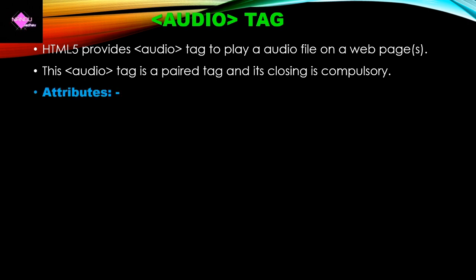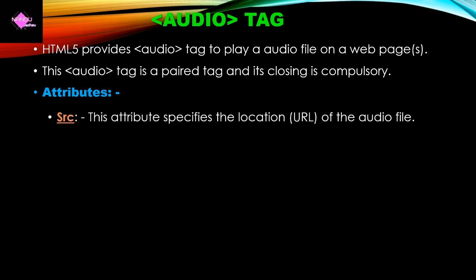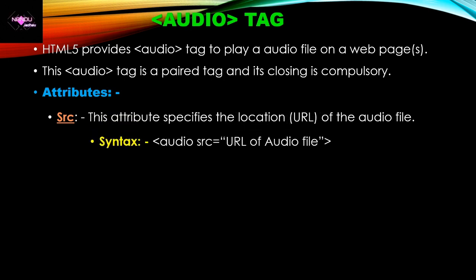If we see the attributes, the first attribute of the audio tag is SRC. SRC means source, and this SRC attribute specifies the URL of the audio file which you want to play on a web page. The syntax is simply: audio SRC equal to URL of the audio file you want to play. This source value can be given as an absolute value or a relative value.